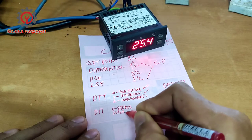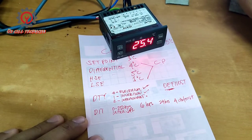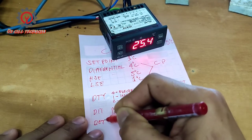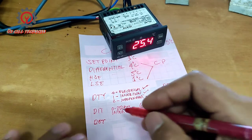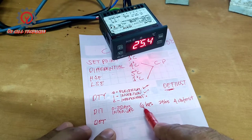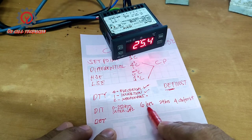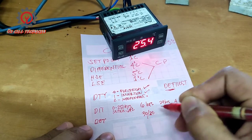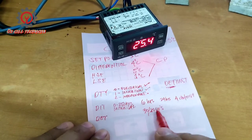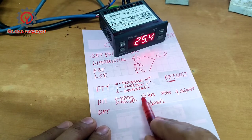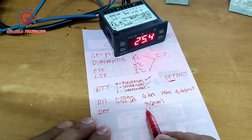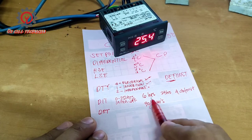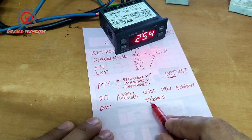Next is DET, which is the length of defrost. We have the interval set at every six hours, and we're going to end that defrost at either 30 or 20 minutes. For every six-hour defrost interval, whether you use 30 minutes or 20 minutes is fine. We're going to set the maximum duration of this defrost, and this long duration will actually be cut short by the DST parameter.